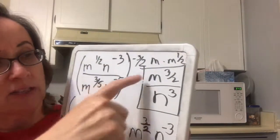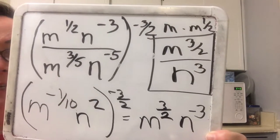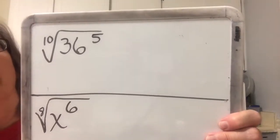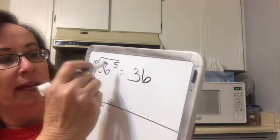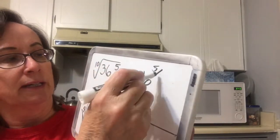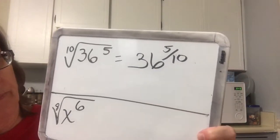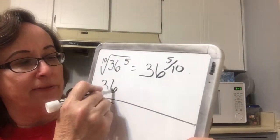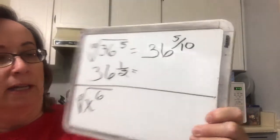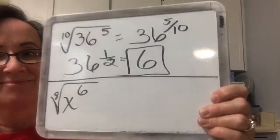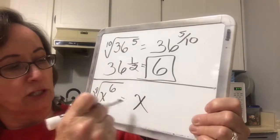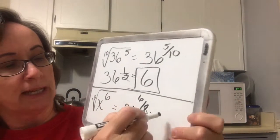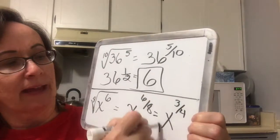Now we're going to write in rational exponent form: 36 to the 5/10. Then 5/10 becomes 1/2, so we get 36 to the 1/2, which is 6. On this one, we write the rational exponent as 6 over 8, which is x to the 3/4, and that is all I can do with that one.